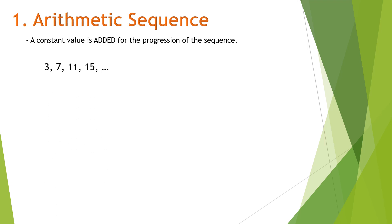For example: 3, 7, 11, 15. This is an arithmetic sequence because there is a number constantly being added for the progression. From 3 becoming 7, number 4 was added. From 7 becoming 11, number 4 was added as well. Then 11 becoming 15, number 4 is also added. This proves that this sequence is an example of an arithmetic sequence.